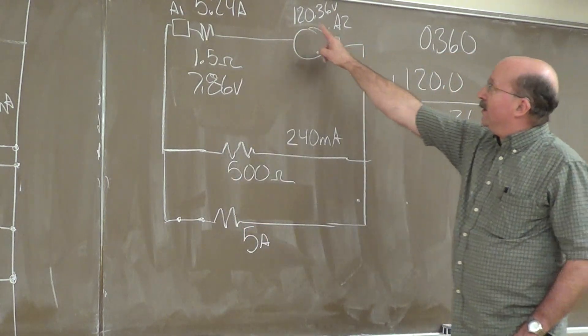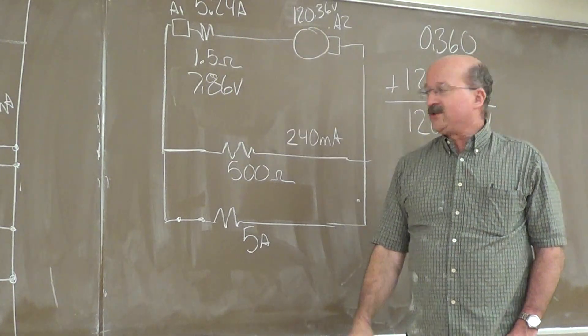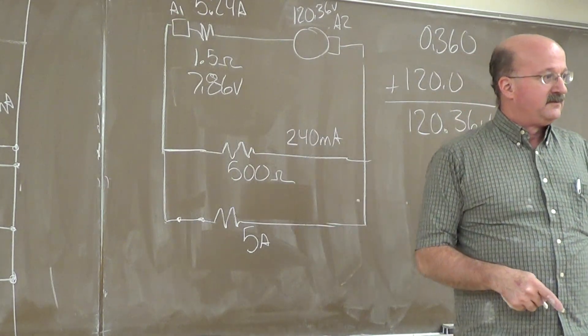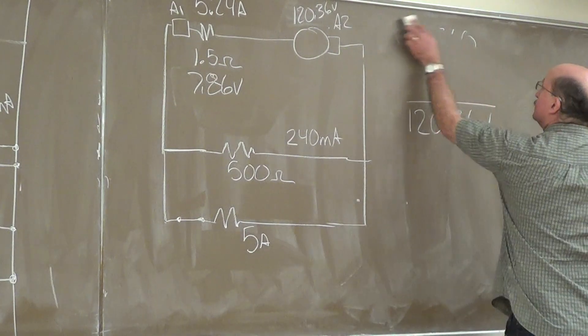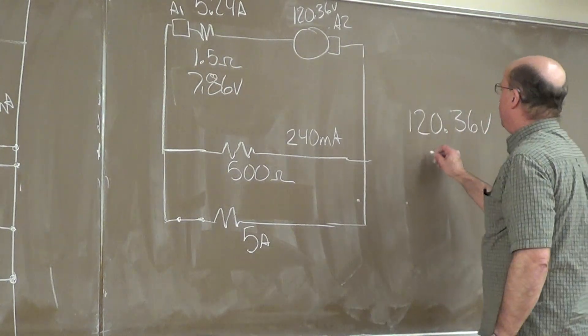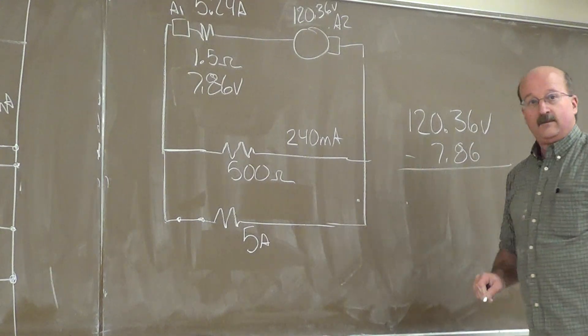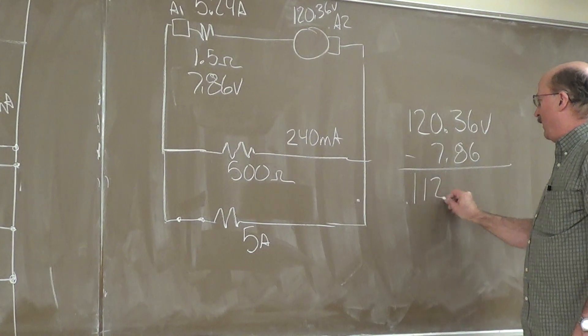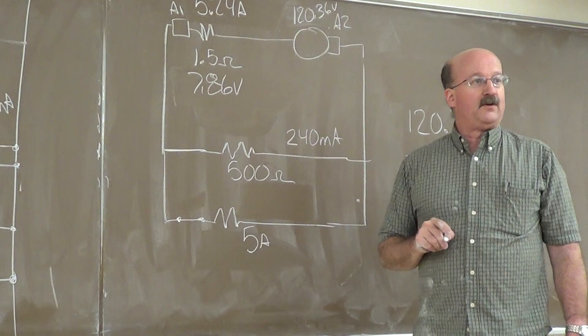So, generating 120.36 minus 7.86, what is our new load voltage? 120.36 minus 7, 12.5. 12.5. Sorry, I got 112.5. 112.5 volts. That's our new load voltage.